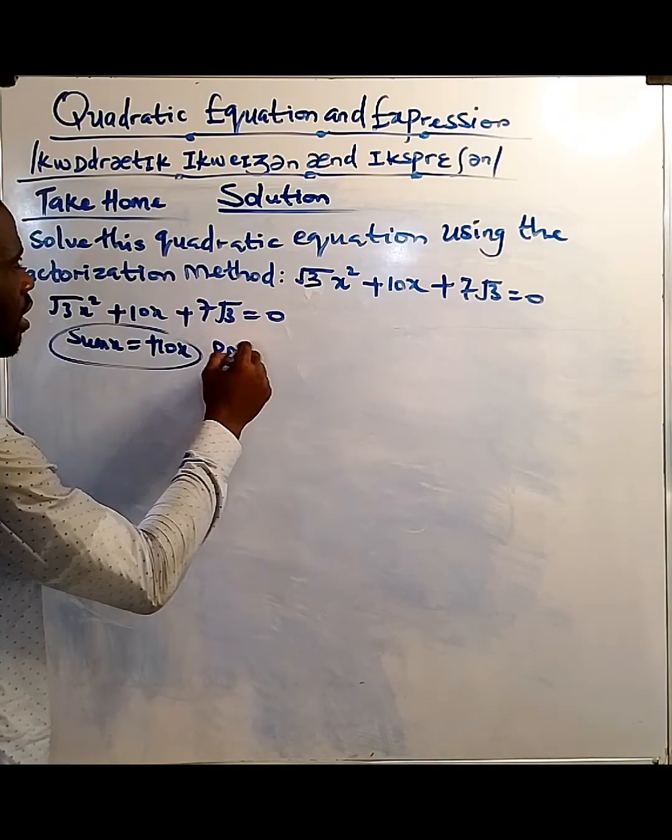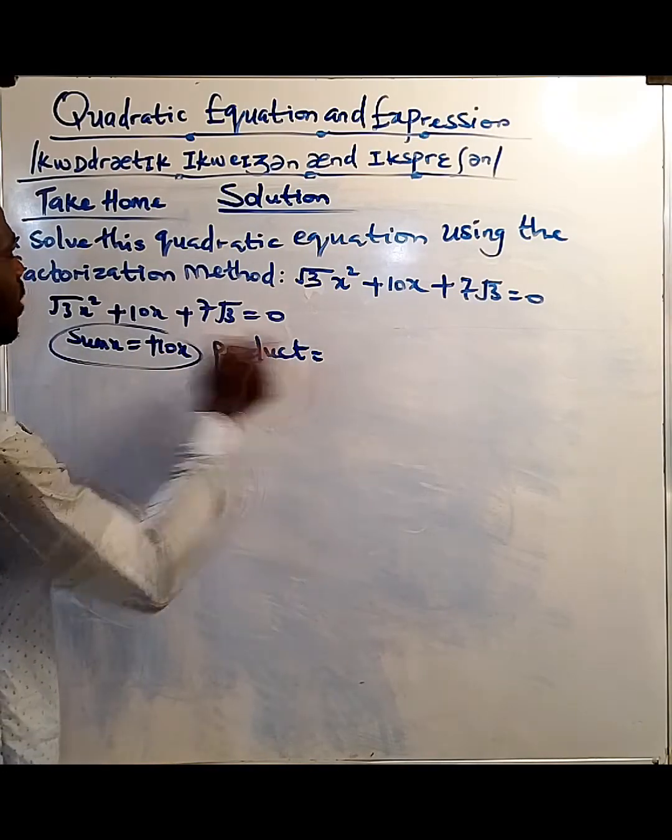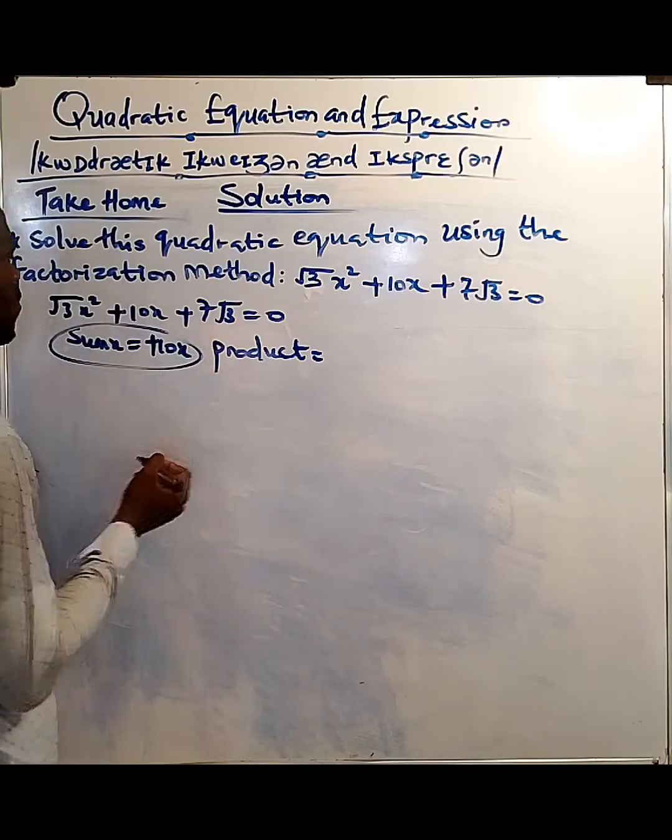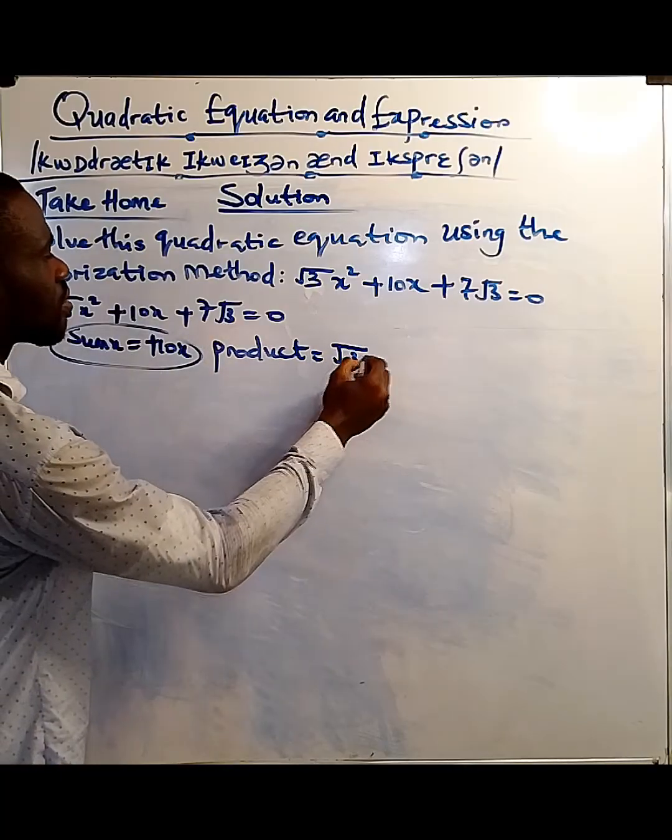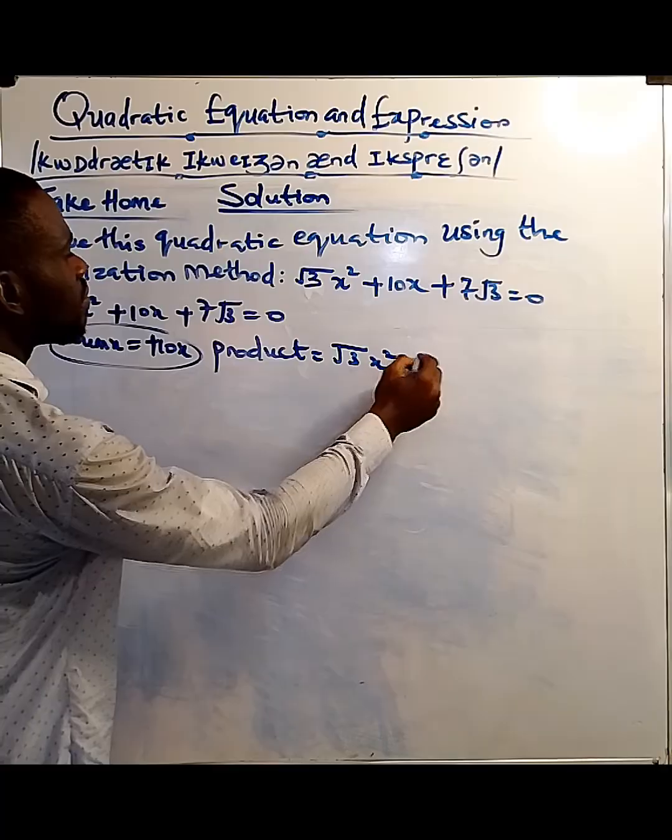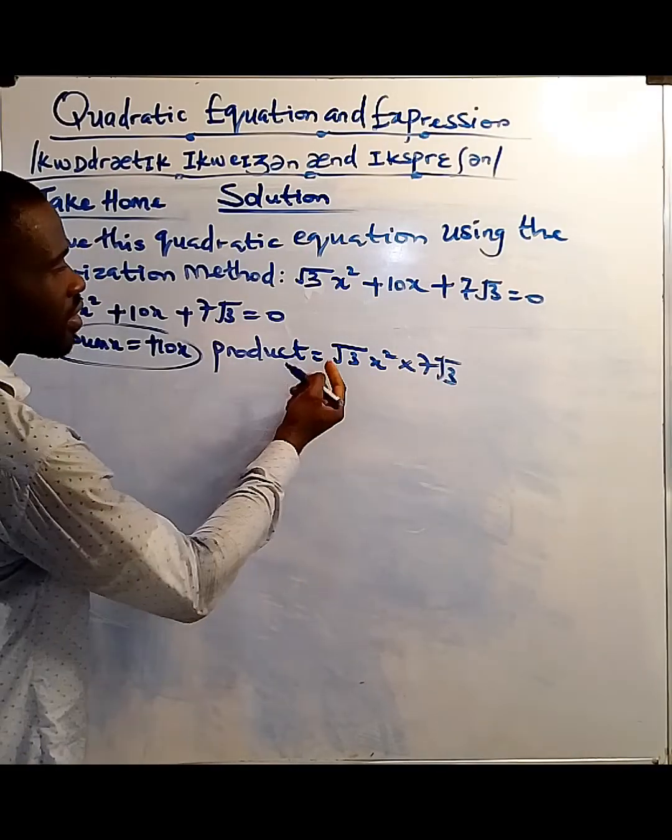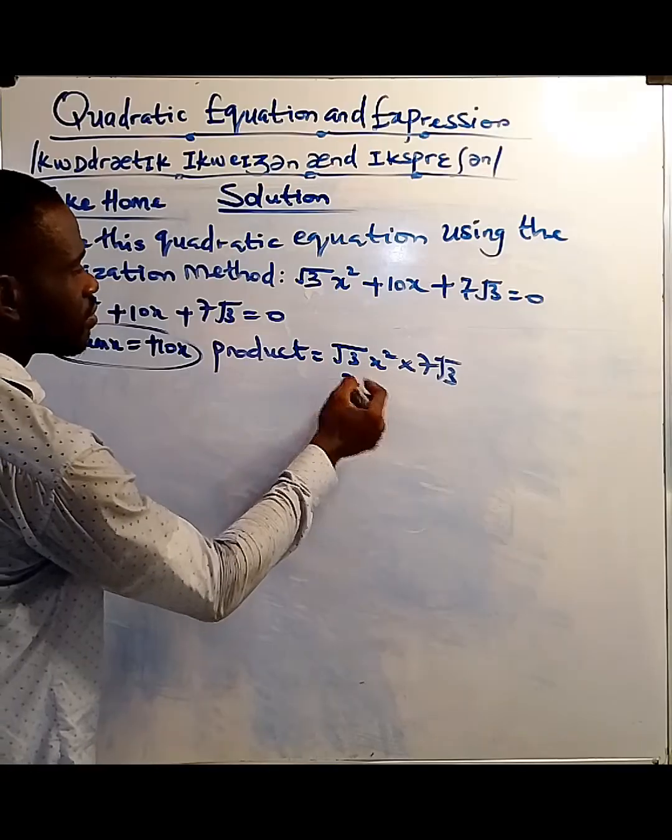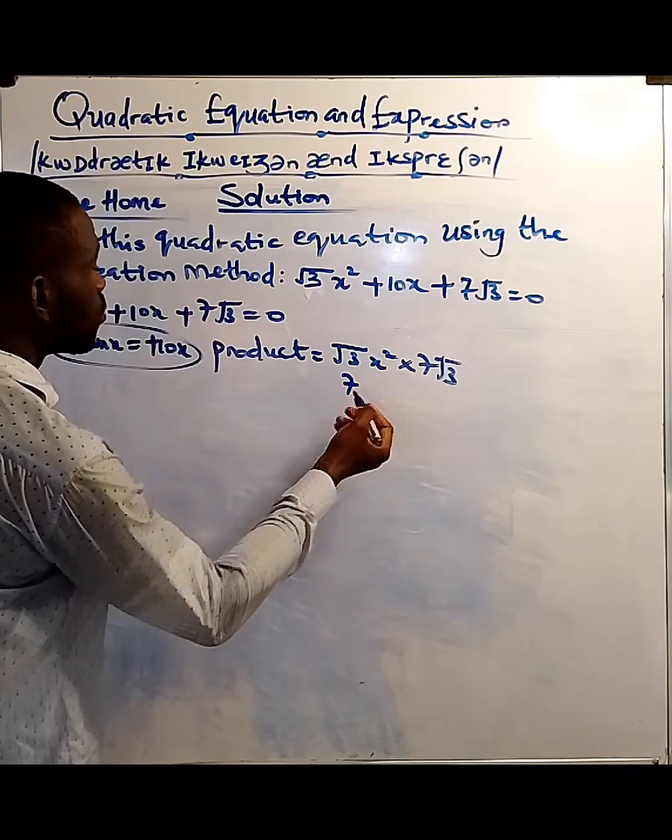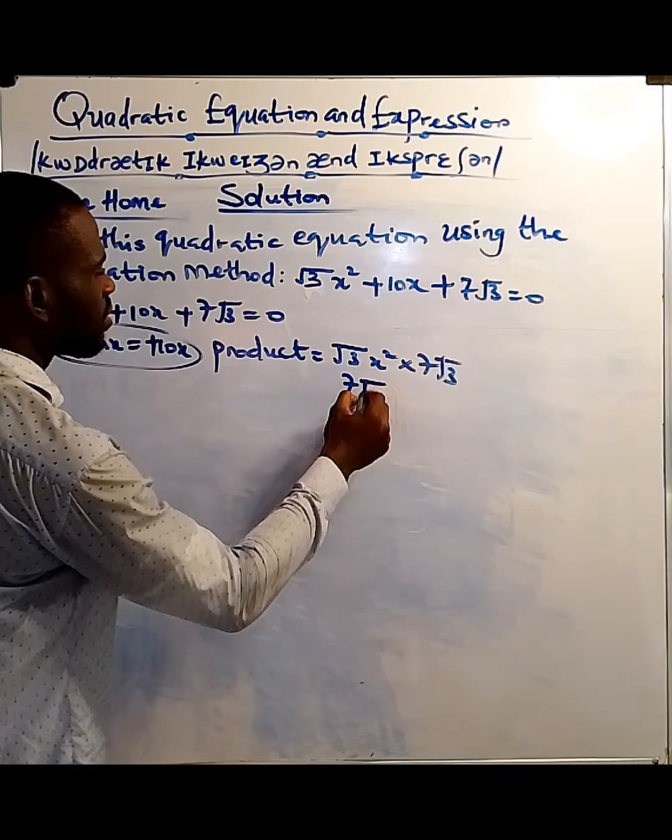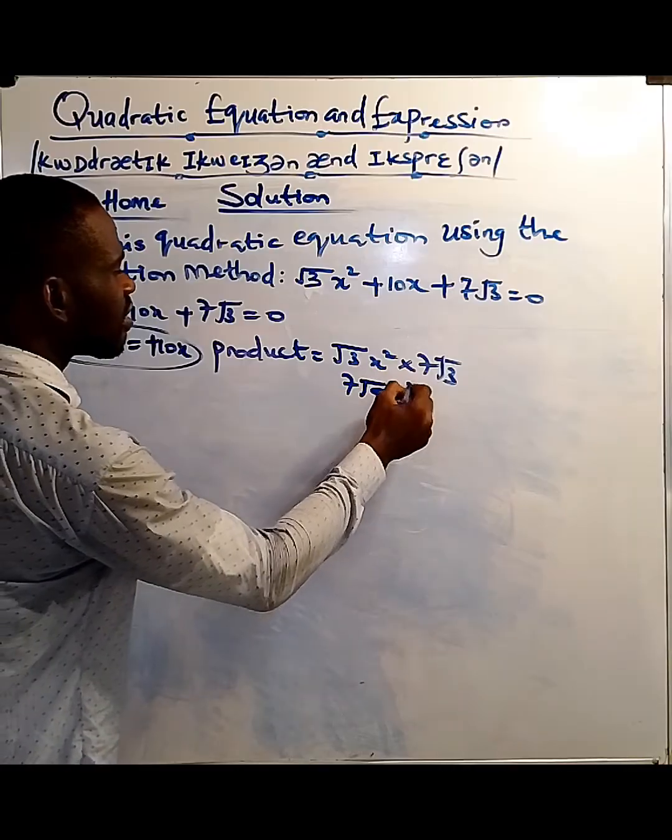Now how do we get the product? We get the product by multiplying what we have here. So the product is √3x² times 7√3. So what do we have here? That's 7, and 7√3 times √3 gives us √9, which is the same thing as √9, which equals 3.